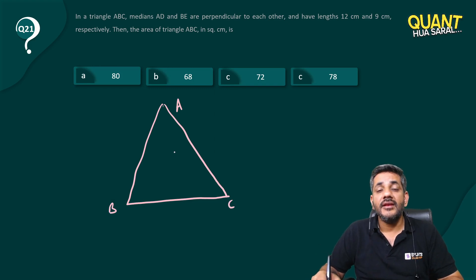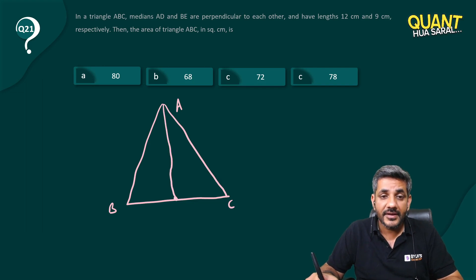In the triangle ABC, median AD and BE are perpendicular to each other. We all know what is median—median meets the midpoint of the opposite side. So AD and BE, there is another median. He says they are perpendicular to each other.